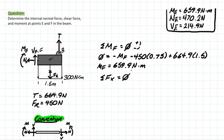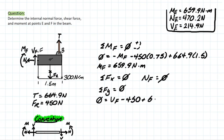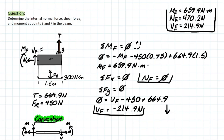Moving on to forces at X, we notice there are no X components in this problem, meaning NF is going to equal 0. Then lastly, taking Fy to solve for shear force, we have the shear force positive minus 450, plus the tensile force 664.9 newtons. Solving for VF, we are left with negative 214.9 newtons, which means the shear force is actually going downwards parallel to that cross section. These are your final answers for cut F. I hope this helped to understand internal forces a little bit better — we'll do one more problem to really solidify our learning.